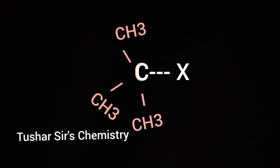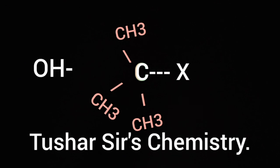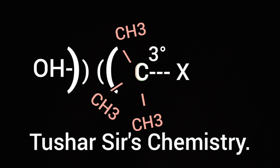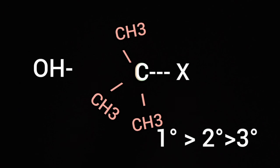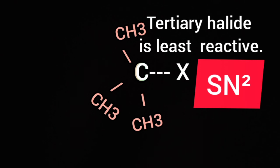Tertiary halide is less reactive because the bulky groups present in tertiary halide hinder or oppose the approaching nucleophile OH minus. So the order of reactivity is as follows: primary alkyl halide greater than secondary alkyl halide greater than tertiary halide. Tertiary halide is least reactive in SN2 mechanism.